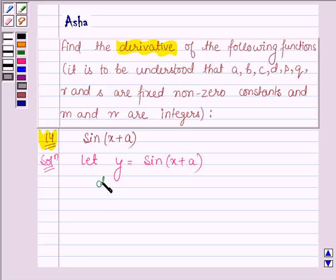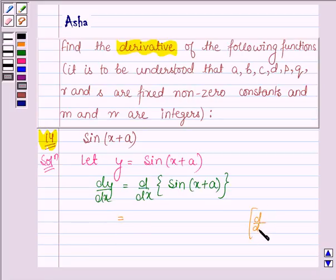We have to find its derivative, that is dy upon dx. It is given by d upon dx of sine X plus A. The derivative of sine theta with respect to theta is cos theta.